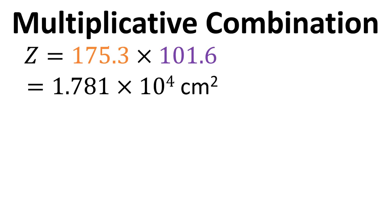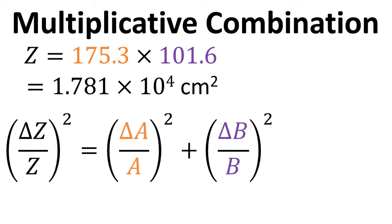This is referred to, again, as a multiplicative combination, and the equation, again, is shown here. So it's delta Z divided by Z squared equals delta A divided by A squared, delta B divided by B squared, added up.